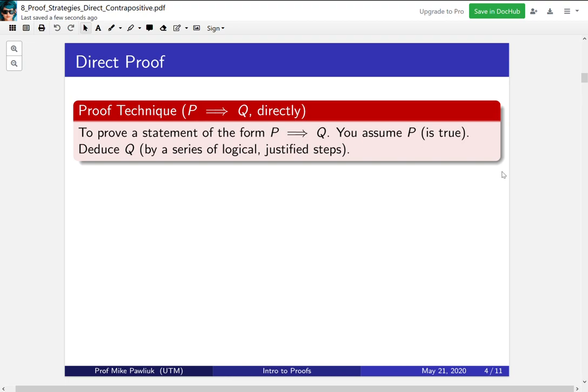Our first proof technique for today is how to prove P implies Q directly. If you want to prove a statement of the form P implies Q, you assume P and you deduce Q. When we say assume P, we mean assume it is true, and when we say deduce, we mean by a series of logical or justified steps. You start with P and you get to Q, that's the idea.